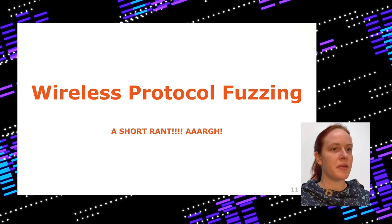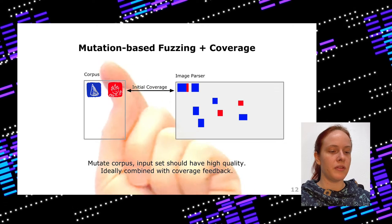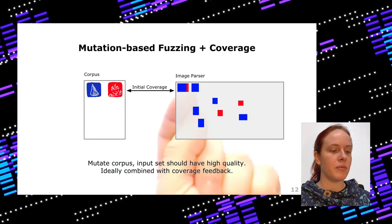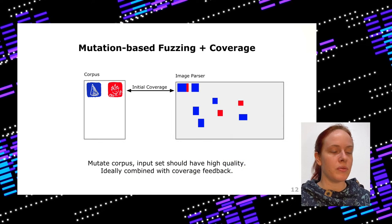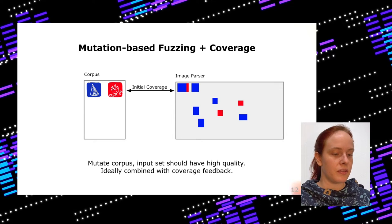Now let's start with an introduction to wireless protocol fuzzing. Current tooling for fuzzing is usually not made to fuzz a protocol. Starting with a very simple fuzzer — an image parser fuzzer — you browse your smartphone for PNGs or JPEGs, send them to the image parser, and observe which functions are executed in the form of basic blocks. The image parser can report which parts were executed, and you start it again and again with different images to get basic block coverage back.